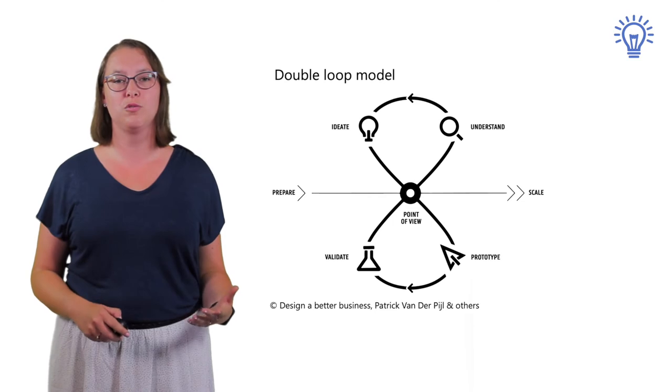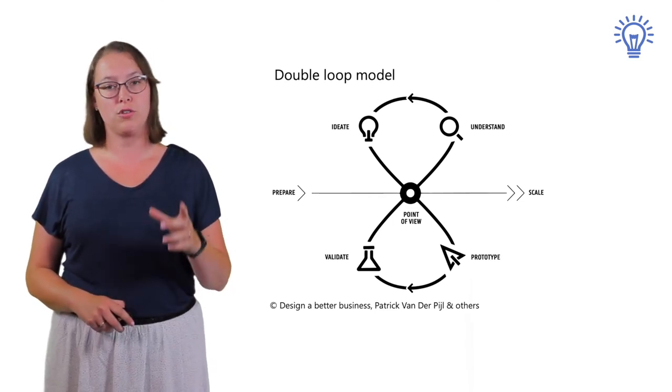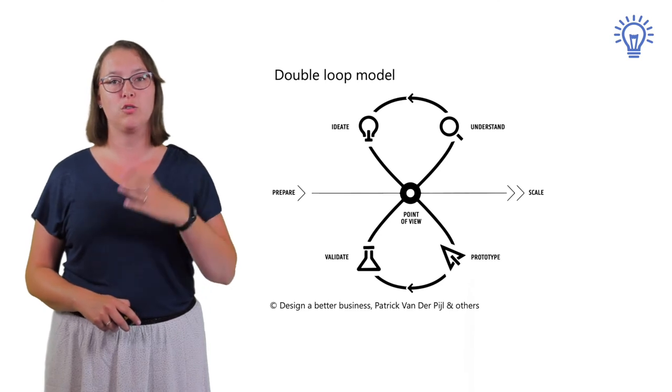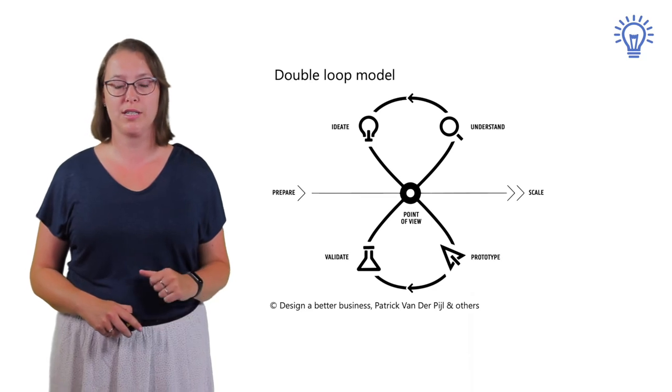The next model is the double loop model from Design a Better Business. This one is more circular, as you can see very clearly that you will go through a continuous loop. It is also better suited to use in business processes.